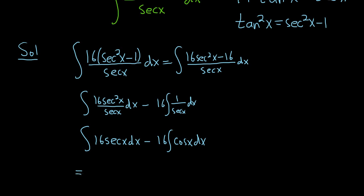Now we can integrate. The integral of secant is the natural log of the absolute value of secant plus tangent. Super important formula to know. So this is the natural log of the absolute value of secant x plus tangent x. This formula comes up a lot.